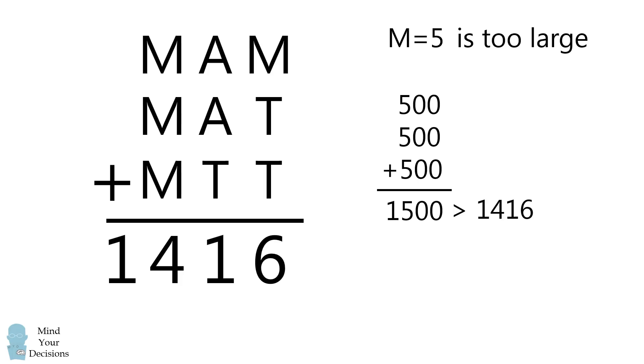Therefore, M equals 5 produces a sum that's too large and it's not possible. The same logic is true for M greater than or equal to 5. We can eliminate all of these possibilities.